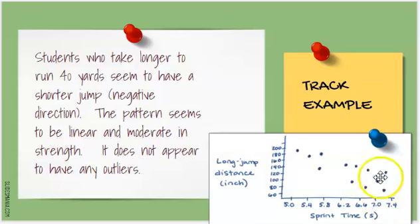Looking at my scatter plot about the sprint time and long jump distance, here's how my answer would look using dots. Students who take longer to run 40 yards seem to have a shorter jump, indicates a negative direction. The pattern seems to be linear and moderate in strength. It does not appear to have any outliers. I've covered direction, form, strength, and outliers in just a couple sentences.